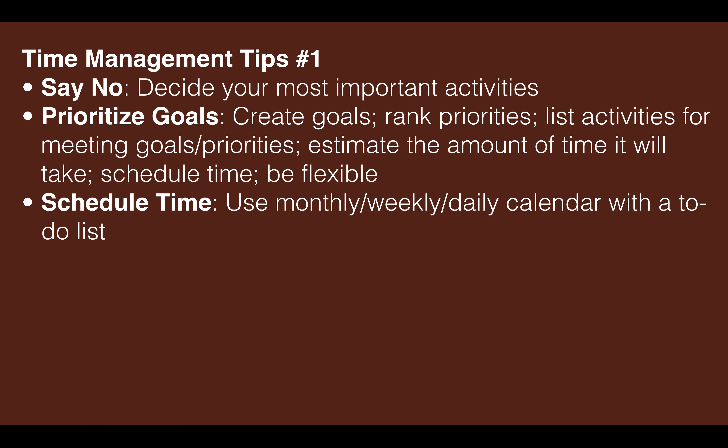List the activities for meeting your goals and priorities, because the goals might be very big and you may need smaller activities to reach them. Then estimate the amount of time it will take for you to reach those goals and priorities. Schedule your time and be flexible, because sometimes things get in our way.